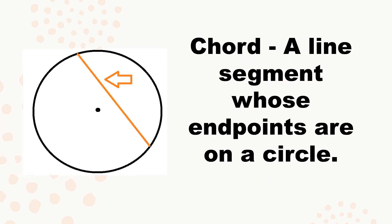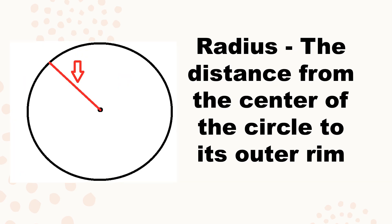Chord — it's a line segment whose endpoints are on the circle. Notice that these two endpoints of this line segment are on the circle, so it's called a chord. Radius is the distance from the center of the circle to its outer rim. The endpoints of the radius are on the center of the circle and on the outer rim of the circle.